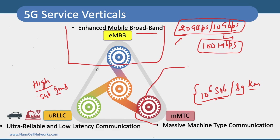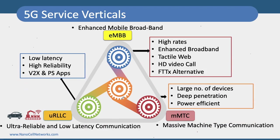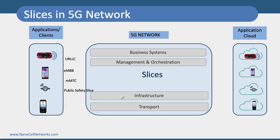The network requirements for eMBB, URLLC, and mMTC are entirely different, but the challenge is that we have to run all these different service verticals on a single network infrastructure. To achieve this — high data rate, more number of devices, low latency, and high reliability — we have to divide our network logically but based on a single physical infrastructure. The answer is slicing, managed by something called Management and Network Orchestration (MANO), using automation, machine learning, and artificial intelligence.